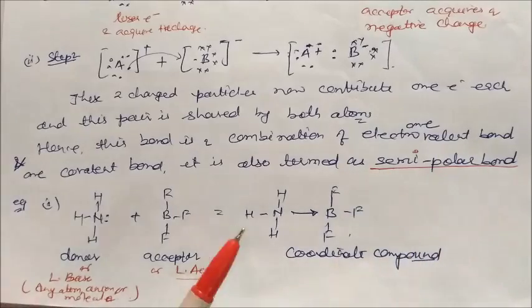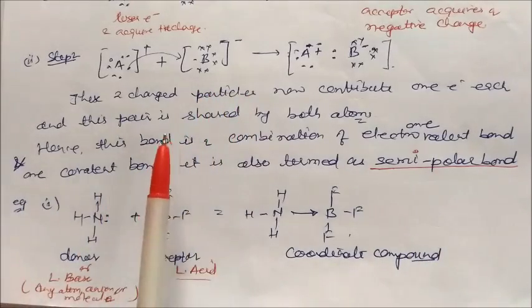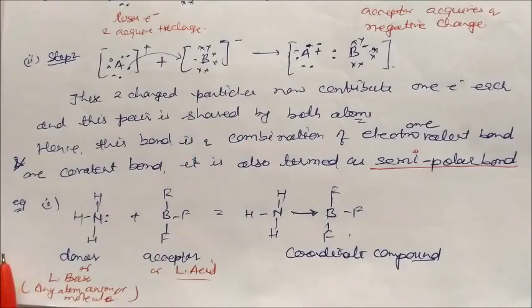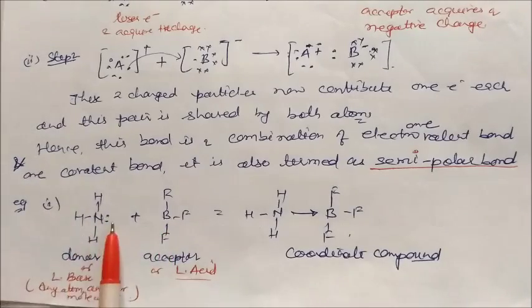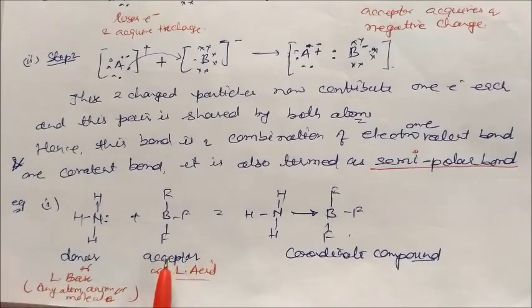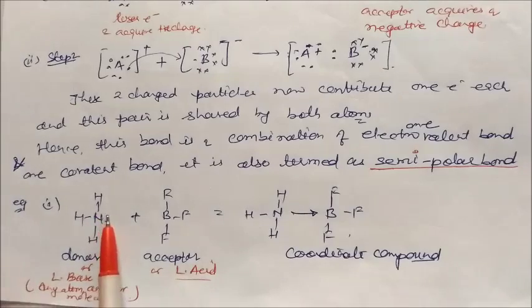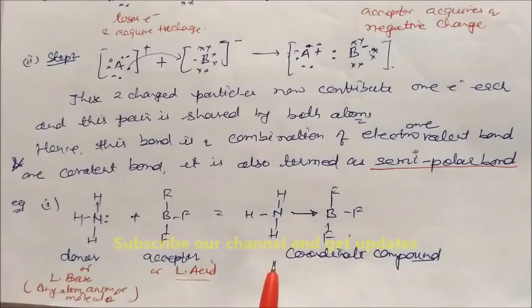So why is this called a semi-polar bond? Because it gives charge to the boron atom — this is just a type of sharing. For example, ammonia and BF3: ammonia has one lone pair, so it is the donor atom or Lewis base. BF3 is the Lewis acid or acceptor. The lone pair of nitrogen will give electrons to BF3, making one complex compound via a coordinate bond.